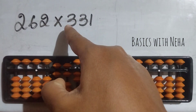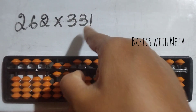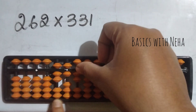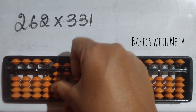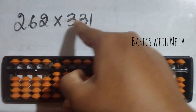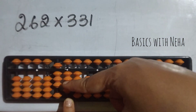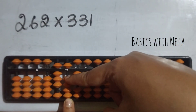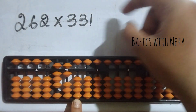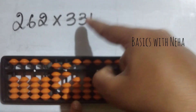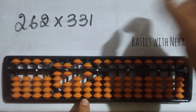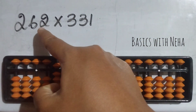Now 6 into 331 — five numbers, start from the fifth rod. 6 threes are 18 — one, to place eight it is plus ten minus five plus three. 6 threes are 18 again — one should be placed here, which is plus five minus four, and to place eight it is plus ten minus two. 6 ones are 6 — it is zero six. Now we are done with 6 into 331.